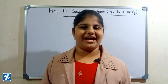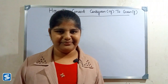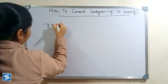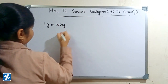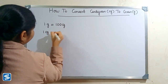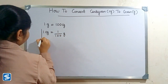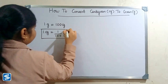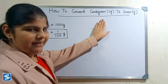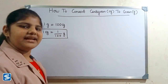Hi friends, welcome to So Much channel. In this video I'm going to teach how to convert centigrams into grams. We already know that one gram is equal to 100 centigrams, so one centigram is equal to one by 100 grams. The formula for converting centigrams into grams is: one centigram is equal to one by 100 grams.